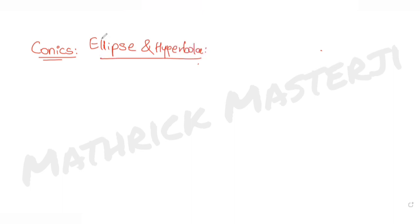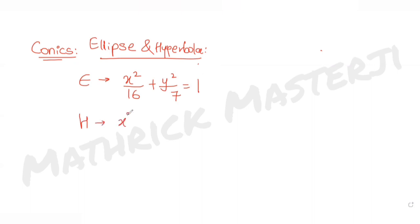The question tells us: let the foci of the ellipse, whose equation is x² over 16 plus y² over 7 equals 1, and for the hyperbola, the equation is x² over 144 minus y² over alpha equals 1 over 25.